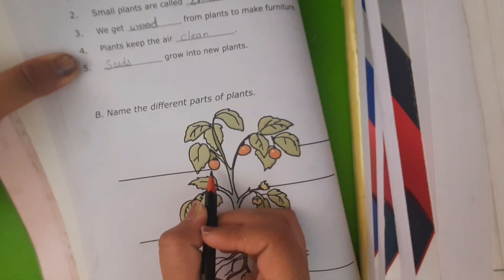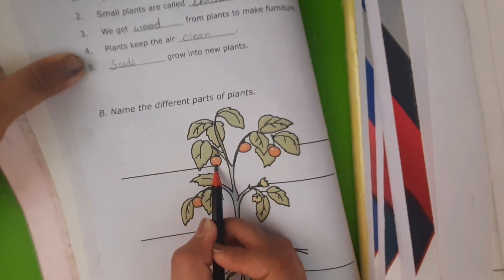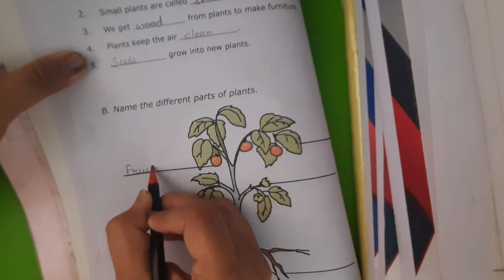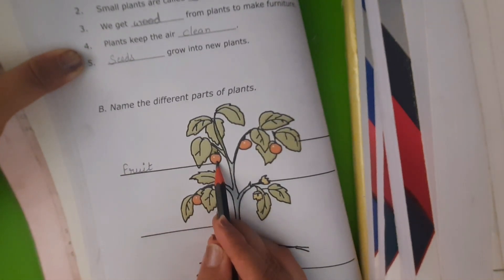You help me to write down the name of different parts of the plant. Which part is this? Yes student, tell me. This is fruit. This part of the plant is fruit.